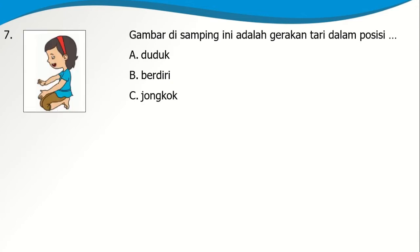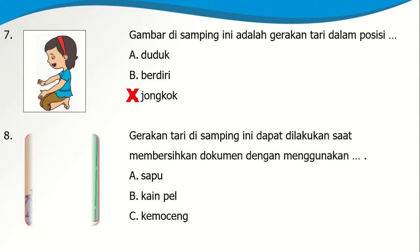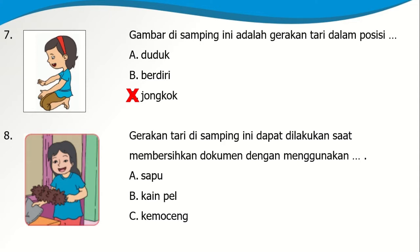Soal nomor 7: Gambar di samping adalah gerakan tari dalam posisi A. Duduk, B. Berdiri, atau C. Jongkok. Ya, ini dalam posisi jongkok. Soal nomor 8: Gerakan tari di samping ini dapat dilakukan saat membersihkan dengan menggunakan A. Sapu, B. Kain pel, atau C. Kemoceng. Gerakan tari bisa diambil dari gerakan keseharian kita. Di sini menggunakan kemoceng.